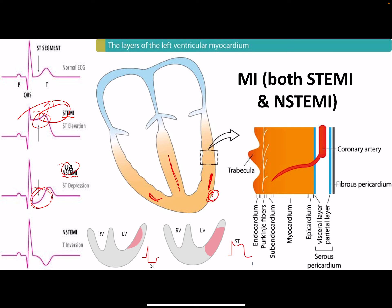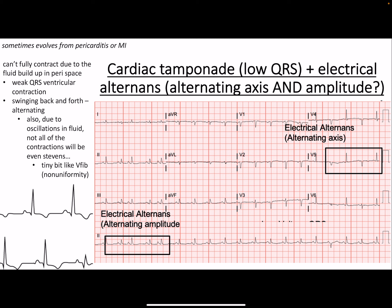In NSTEMI, the epicardium (where blood is supplied from the coronary arteries) is still perfused, so the endocardium — farthest from the blood supply — suffers first. In STEMI (transmural infarction), all layers of the myocardium are affected because the occlusion is complete. The coronary arteries originate from the epicardium, so diffusion can't reach the endocardium from the intracardiac blood — that region infarcts first.